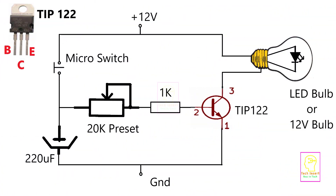This is the complete schematic of the timer circuit. In series with the micro switch we have connected a 220 microfarad capacitor. From the micro switch there is a 20k preset in series with a 1k resistor, connecting to the base of the transistor. This transistor is an NPN transistor. For switching on an NPN transistor we need a positive supply to the base. The micro switch is connected to the positive supply, but since the micro switch is in the off position, the base of the transistor will not get the positive supply.